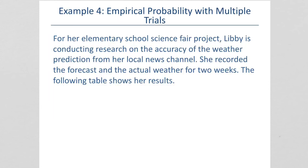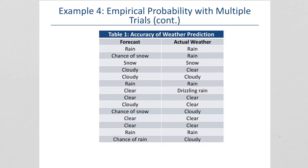For her elementary school science fair project, Libby is conducting research on the accuracy of weather prediction from her local news channel. She recorded the forecast and the actual weather for two weeks. The following table shows her results. So, the forecast for the first day was rain, and it actually rained. The forecast for the second day was a chance of snow, and it rained. That seems to happen a lot here in the mountains. And then the third day, the forecast was snow, and it actually snowed, and so forth.